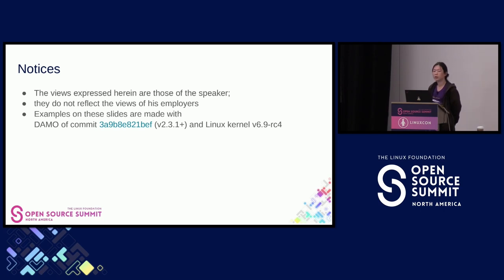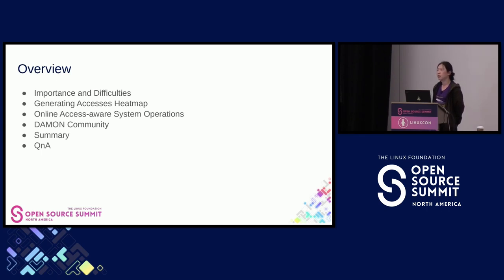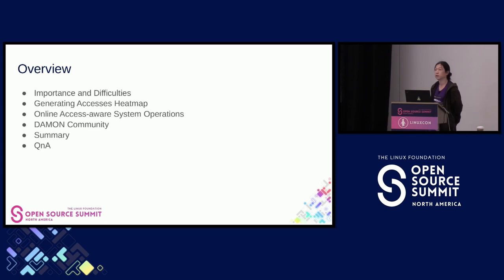Some notices: the views expressed herein are those of the speaker and do not reflect the views of my employer. Examples on these slides are made with a specific DAMO commit based on 2.3.1 and Linux kernel 6.9-RC4. For the overview, I'll introduce why access-aware efficient system operations are important and the difficulties in implementing that, how we can generate access heat maps efficiently, how we can do access-aware system operations online, introduce the DAMON community, and then give a short summary followed by Q&A.